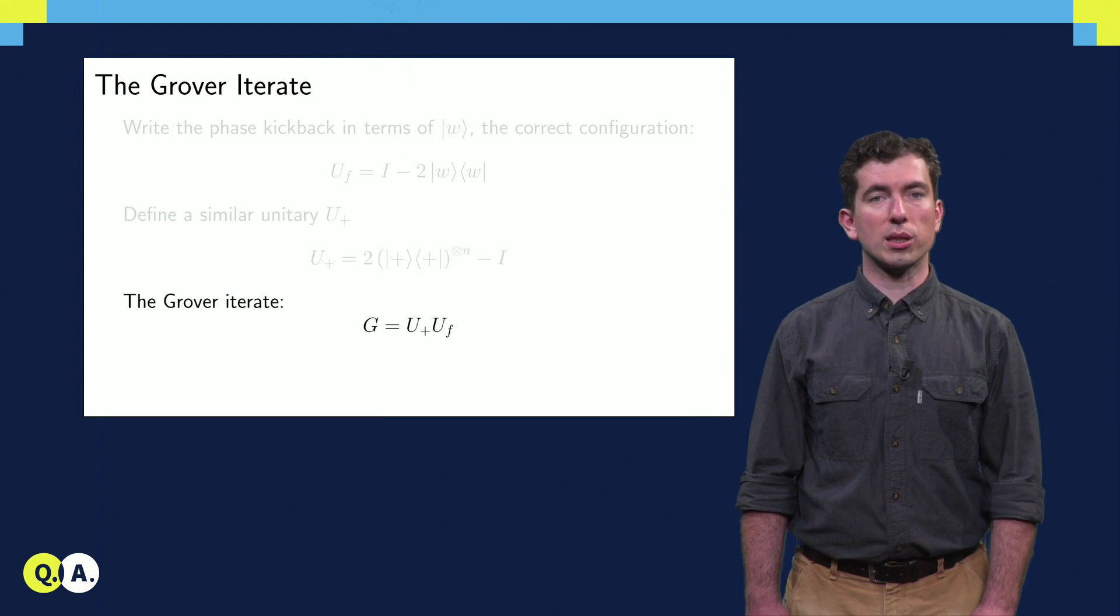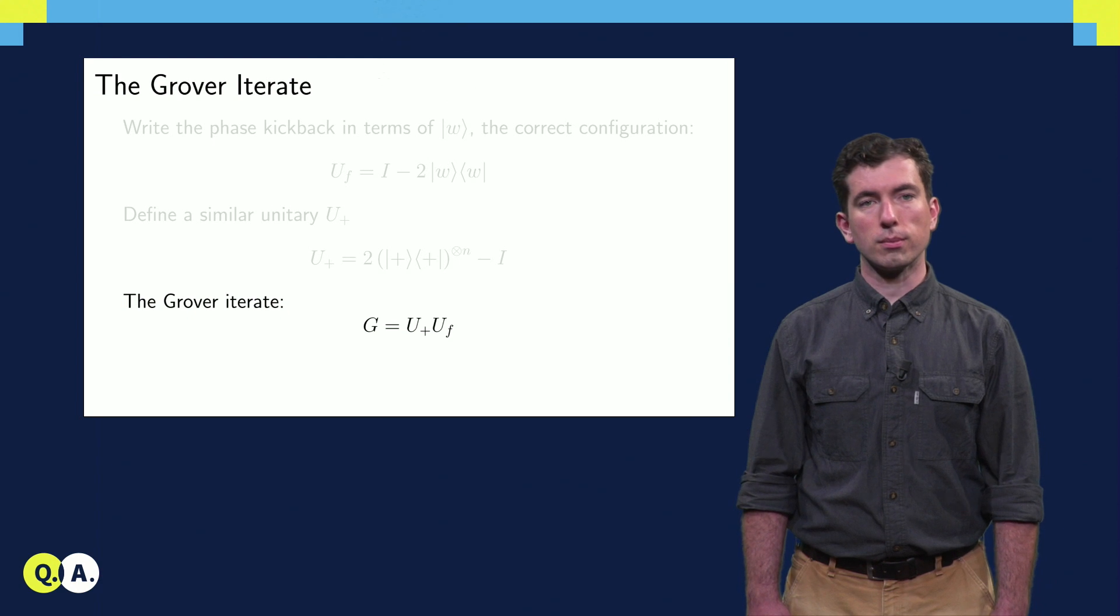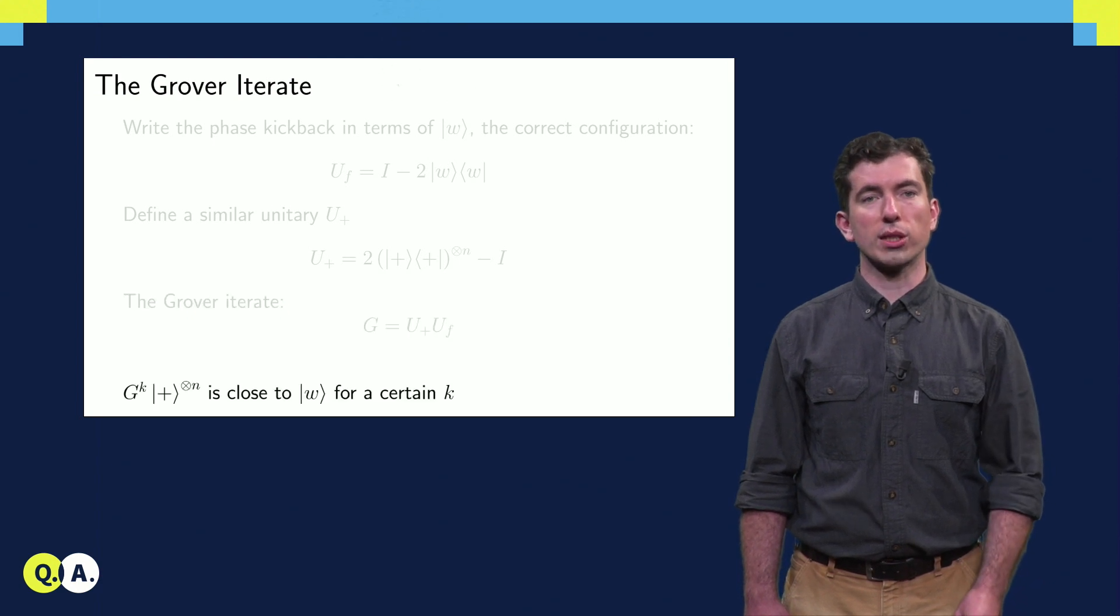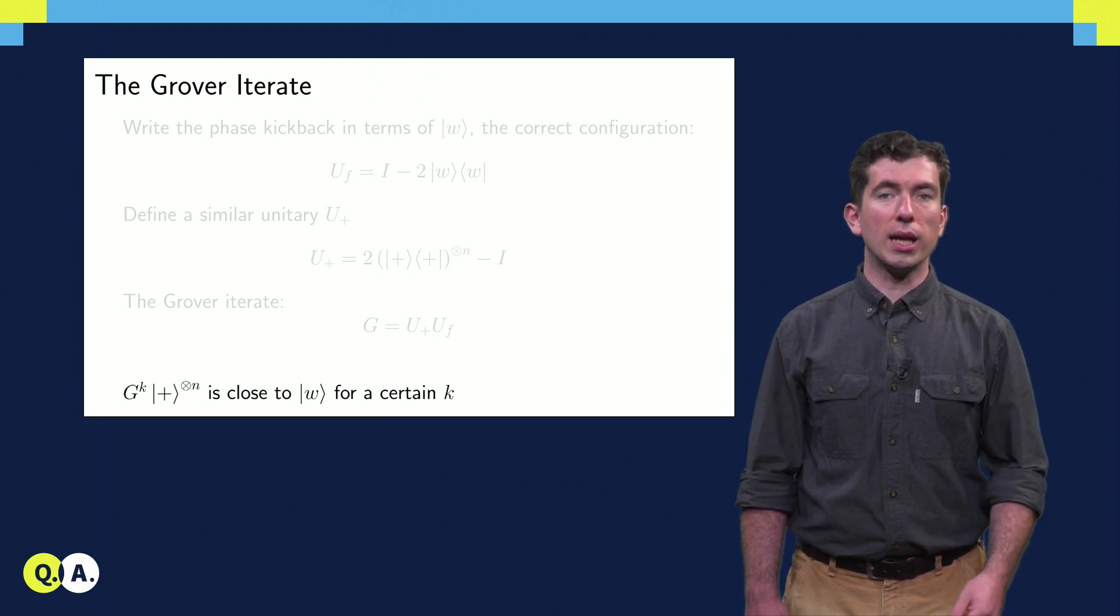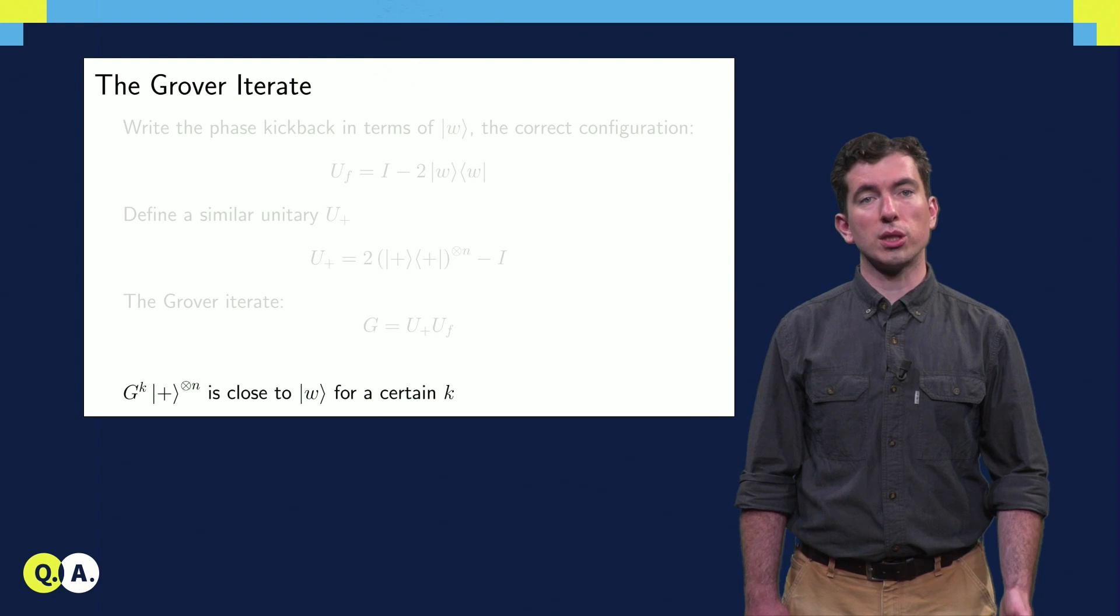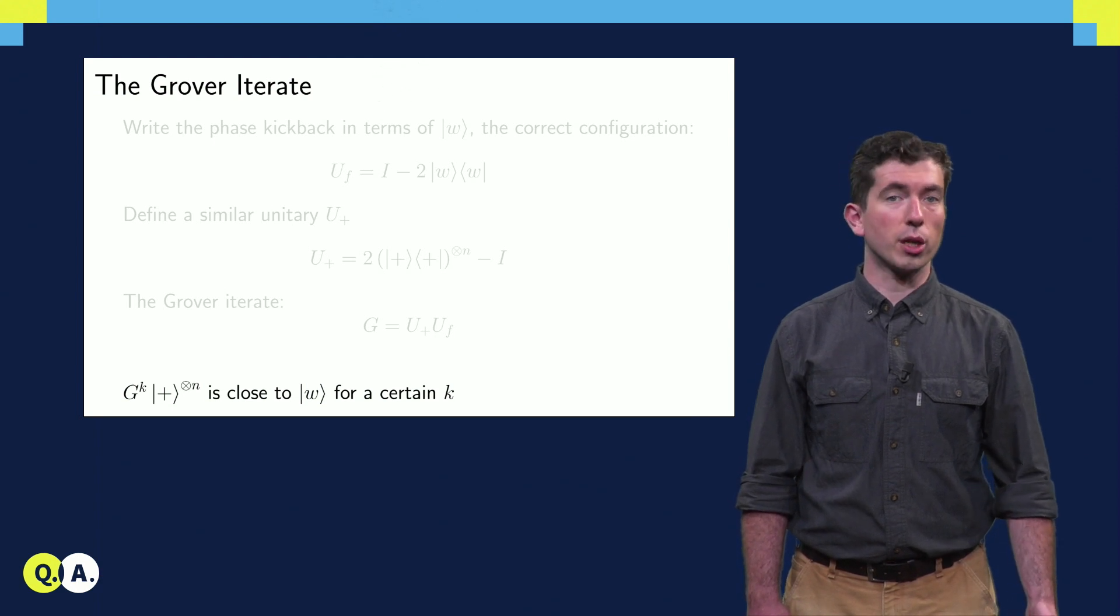Now we're going to take the product of these two operators and call it the Grover Iterate G. We're going to show in the following section that if we apply G k times to the all-plus state as an input, we end up with a state that's very close to W, the state describing the winning configuration.